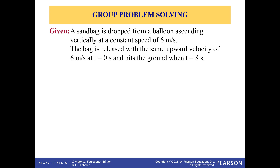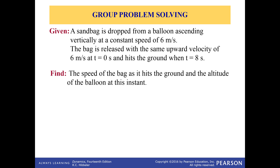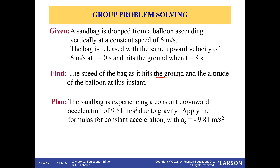We have a sandbag that is dropped from a balloon ascending vertically at a constant speed of 6 meters per second. The bag is released with the same upward velocity of 6 meters per second at time equals 0 seconds and hits the ground when time equals 8 seconds. We have to find the speed of the bag as it hits the ground and the altitude of the balloon at this instant. We'll use two or three of the expressions mentioned earlier.